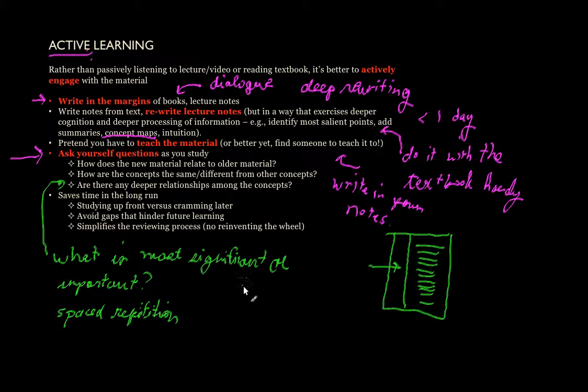In math, if you're trying to become good at it, the key is simply to do a lot of problems. Do lots of problems. That's a form of active learning.